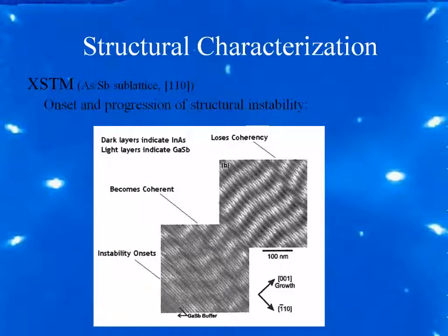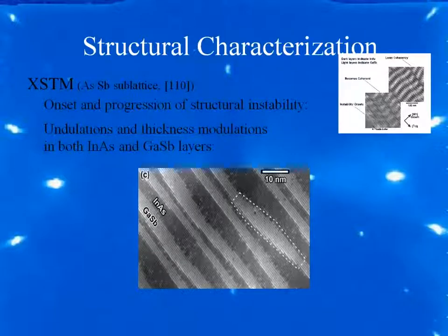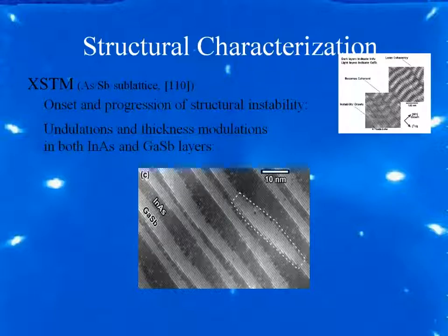Not only do we see undulations in thickness — the indium arsenide, which is the dark region, starts at some thickness and reduces down toward the center. We see the same phenomenon in the gallium antimonide. Also, looking down to atom size, you can see some of those lighter atoms in the dark region and some dark atoms in the white region, confirming segregation of anions from one layer to the other.